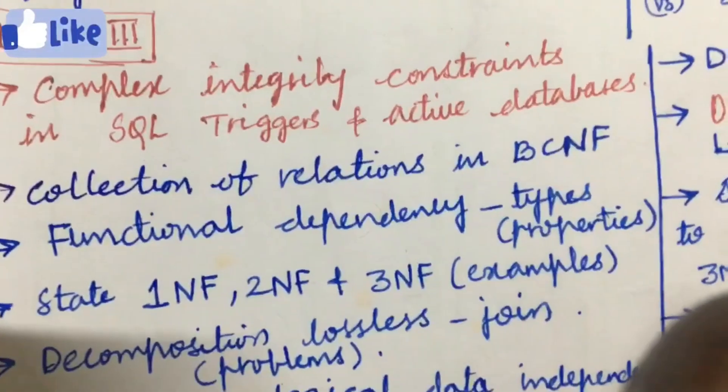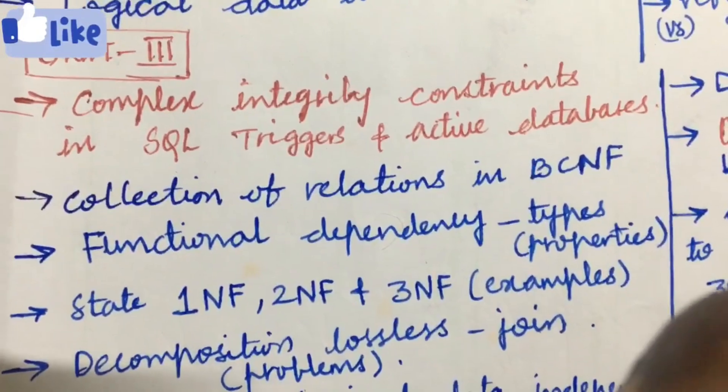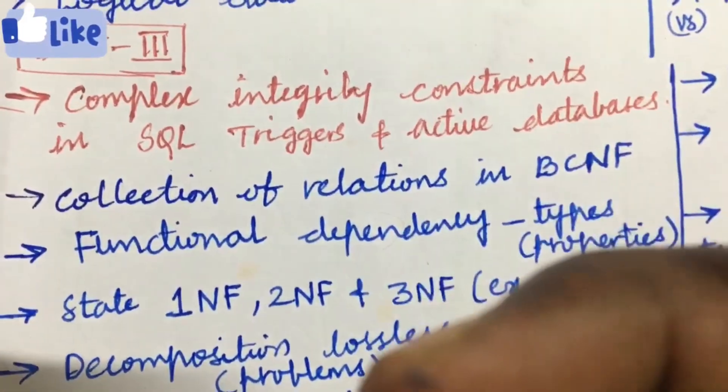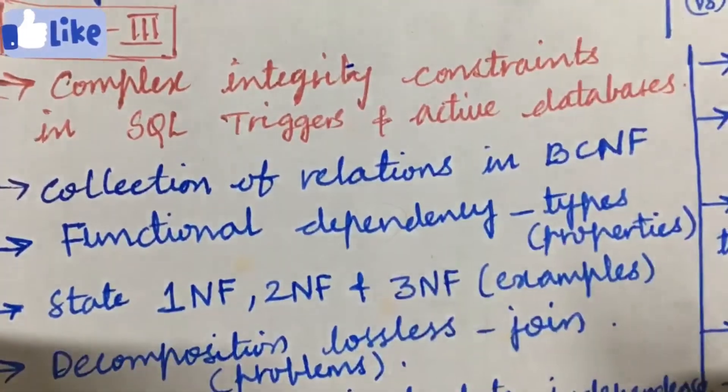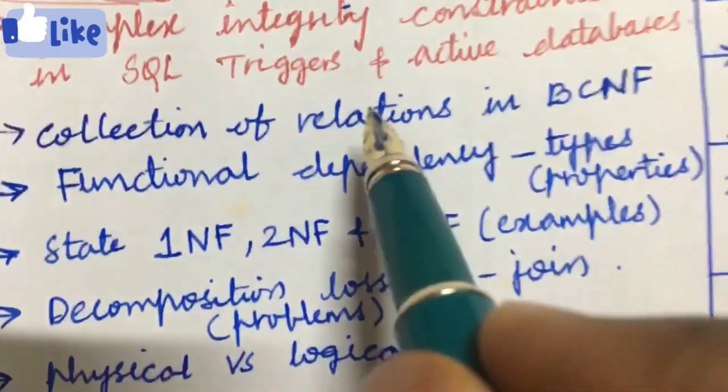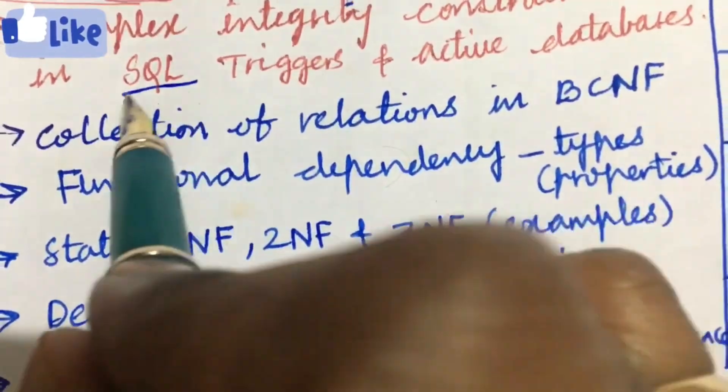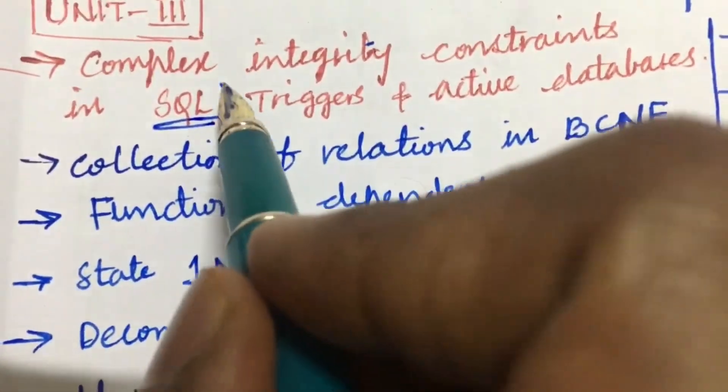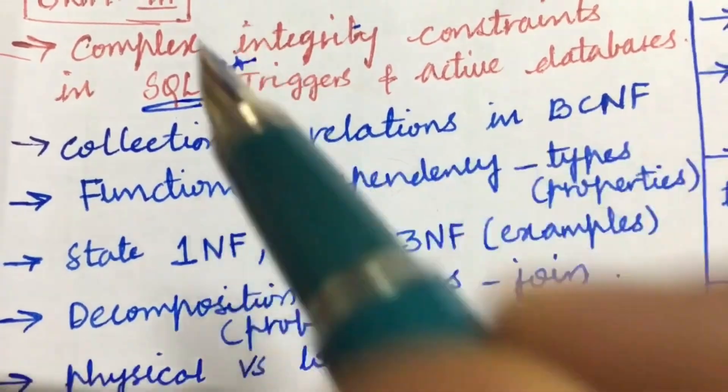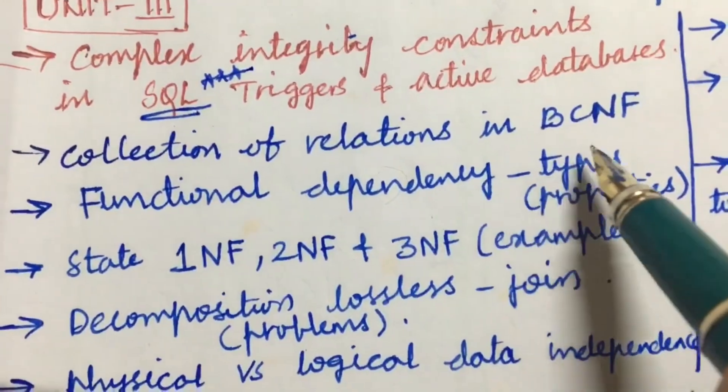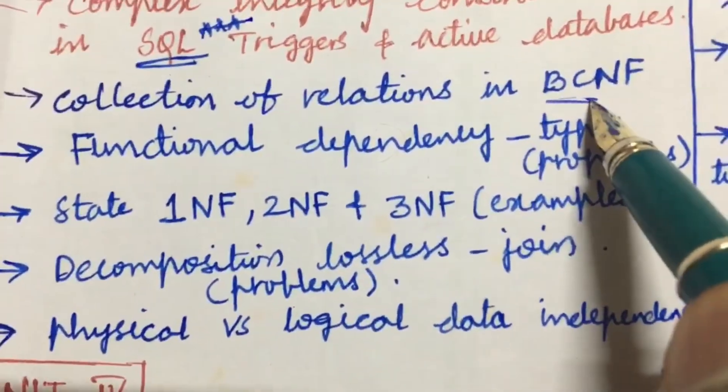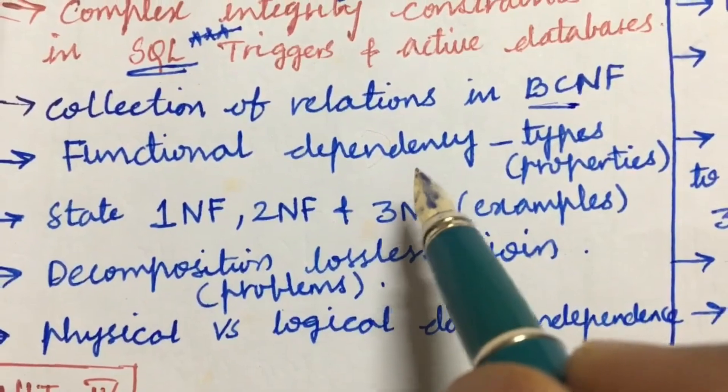Next, jump into Unit 3. This is very big in its structure, you may be getting one and a half questions, two questions from this for sure. Complex integrity constraints in SQL, triggers, and active database related to SQL, you are going to get one question for sure, that is a gunshot question. The collection of relations in BCNF, it is also one of the very important, and the functional dependency and its types and properties.